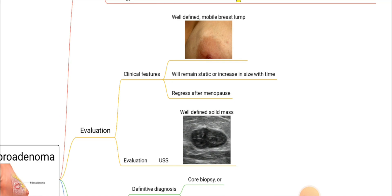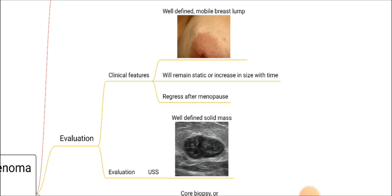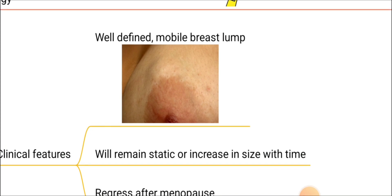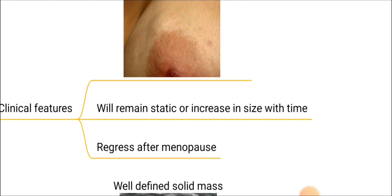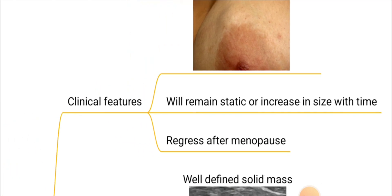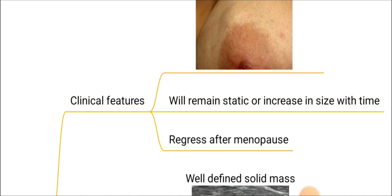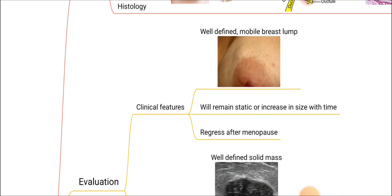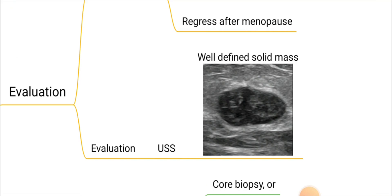In evaluation, we assess any patient with clinical features including history and examination, and also investigations. Clinically, fibroadenoma presents as a well-defined mobile breast lump, as shown in the picture. The size of the lump will remain static or gradually increase with time. Importantly, the size of a fibroadenoma will decrease after menopause. Since it is not attached to the skin or the underlying muscle, it is a well-defined mobile breast lump. We can evaluate the patient with an ultrasound scan, where there will be a well-defined solid mass.